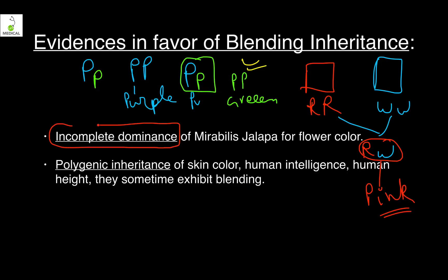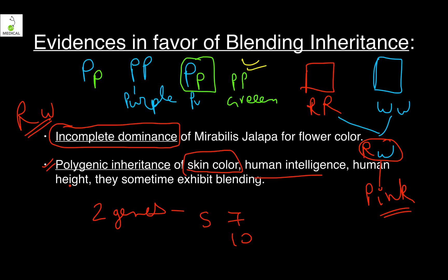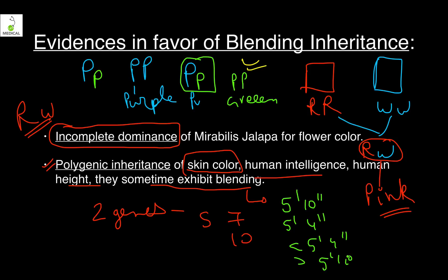Incomplete dominance results in a pink color because red cannot fully dominate white. Polygenic inheritance occurs when more than two genes control a character — for example, skin color, human intelligence, and human height. These can also show blending. Your height may be less than your shorter parent or more than your taller parent, because many genes are involved.